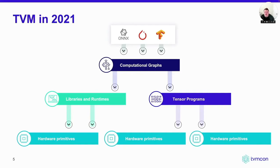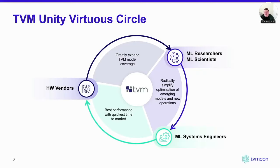One way to view TVM in the past is that there are many different technical components all interoperating to provide end value to users — accelerating their model on a diverse set of hardware devices — but each was developed as an independent technical component. For example, if you import your model through an ML framework to a computation graph like Relay and then offload via BYOC, versus going through TVM's end-to-end compilation, in both cases you interact with a bunch of components with hard boundaries between them.